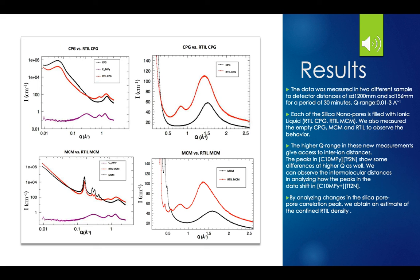On the top column, you can see CPG versus RTIL, and on the bottom column, you can see MCM versus RTIL-MCM. To the right of each graph, you can see the corresponding peaks we concentrated on to analyze the shift and calculate the density. As we analyze the data, we also notice how the higher Q range in these new measurements can give access to inter-ion distances. The peaks in the ionic liquid show some differences at higher Q, and we can observe the intermolecular distances in analyzing how the peaks in the data shift. By analyzing the changes in the silica pore-to-pore correlation peak, we obtained an estimate of the confined RTIL density.